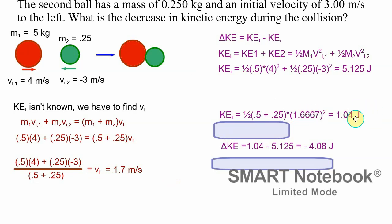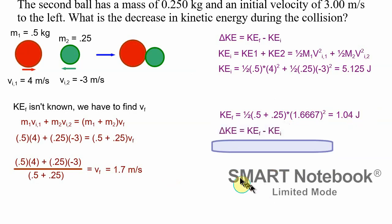And so our final kinetic energy is 1.04. This means that we can now apply delta KE. So that's the final minus initial kinetic energies. And I've already calculated the initial. The final kinetic energy is 1.04 that I just got minus 5.125. And that gives me a negative 4.08 joules.